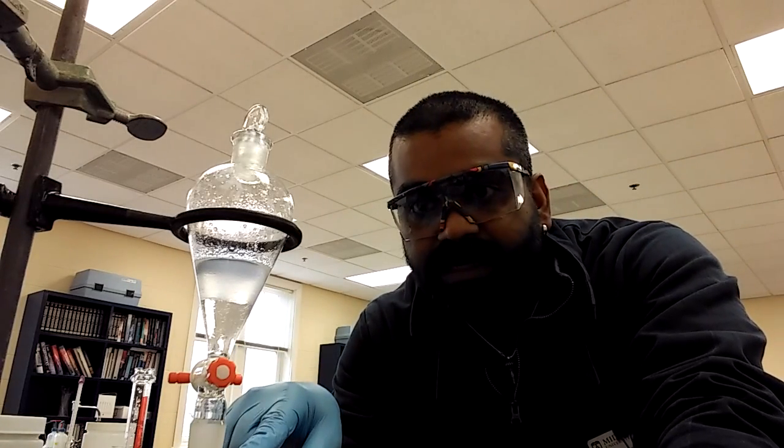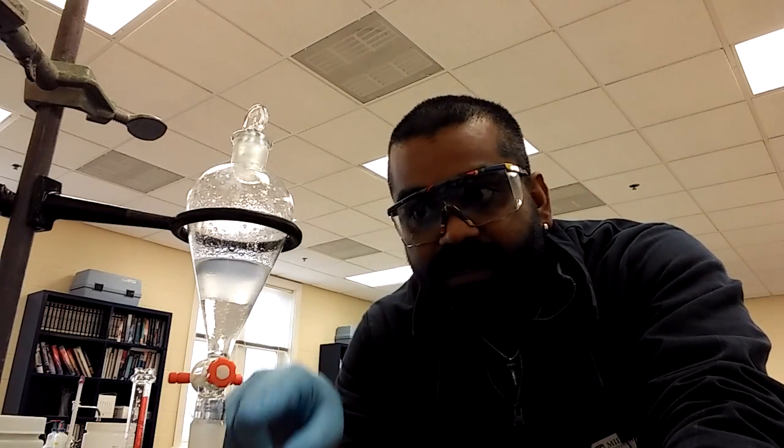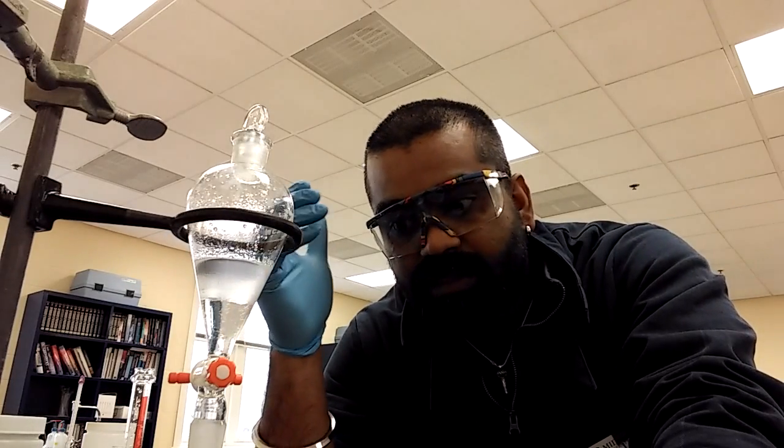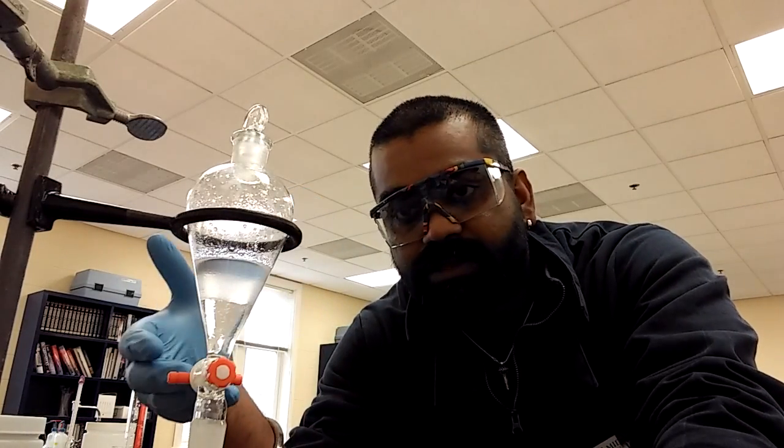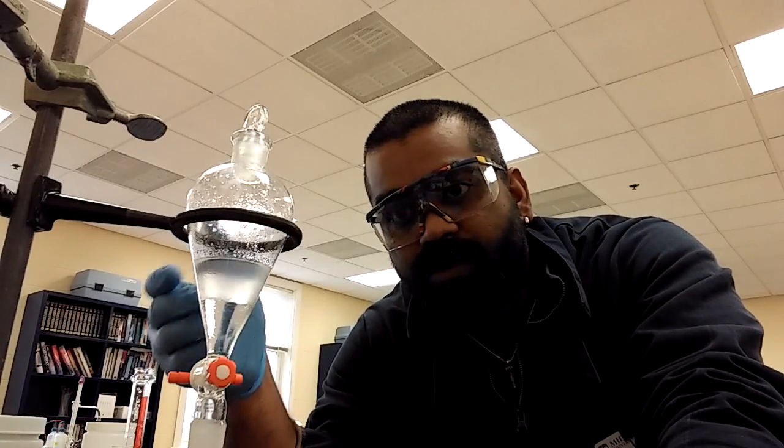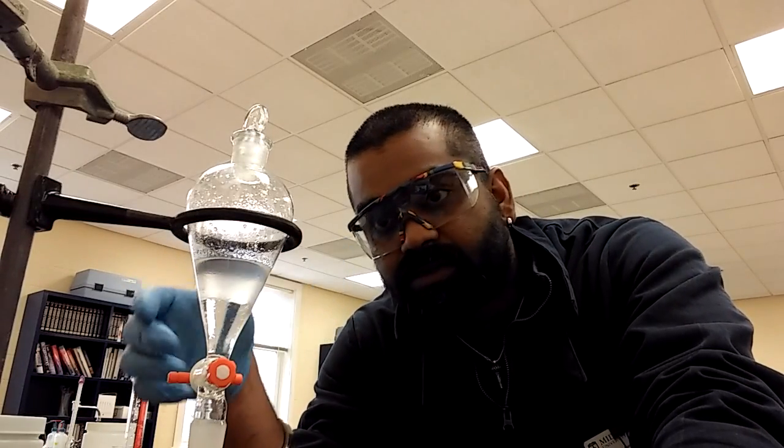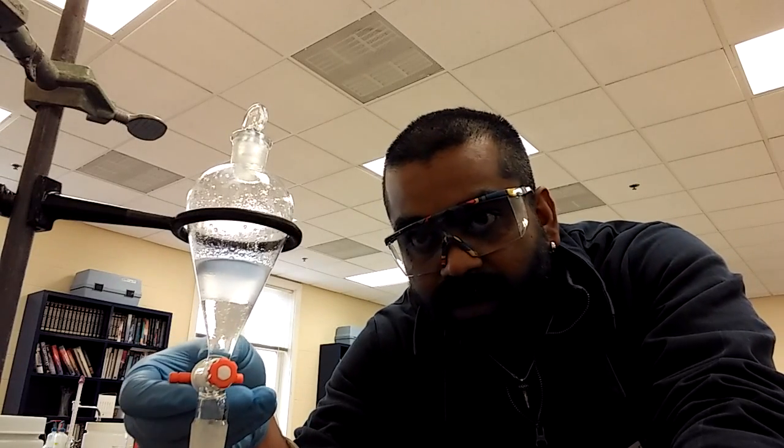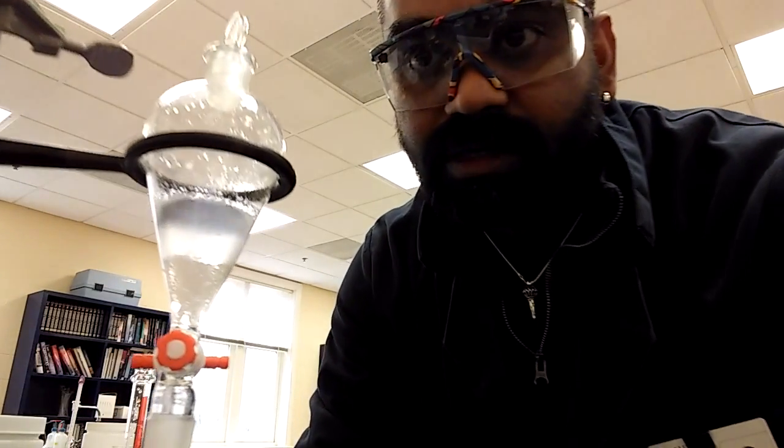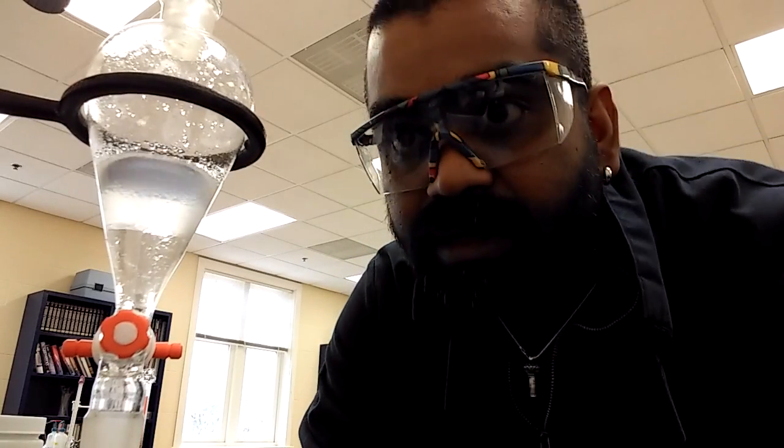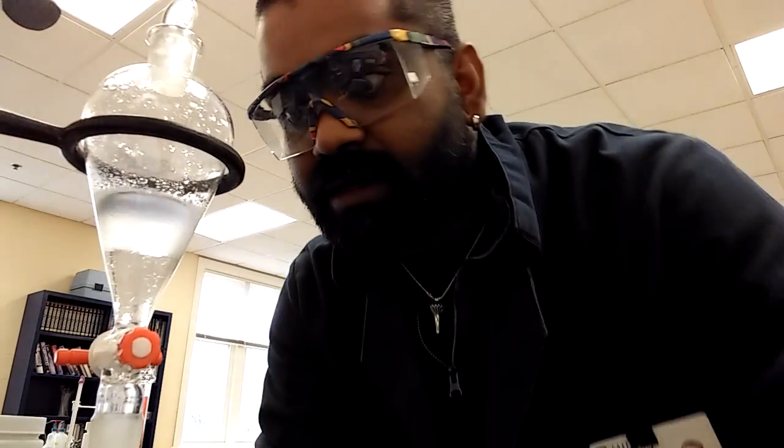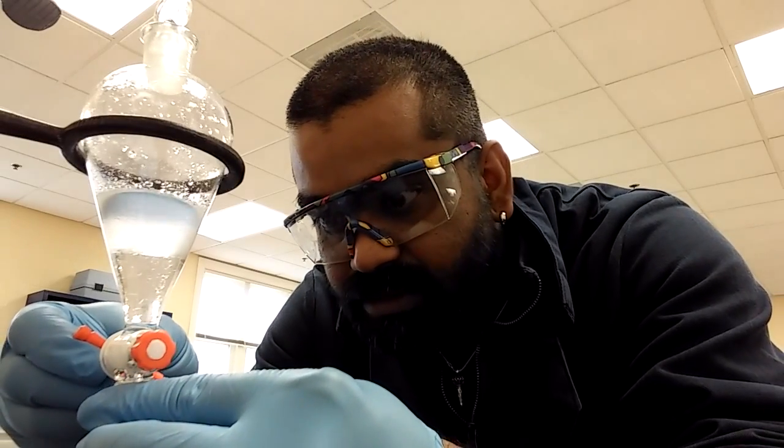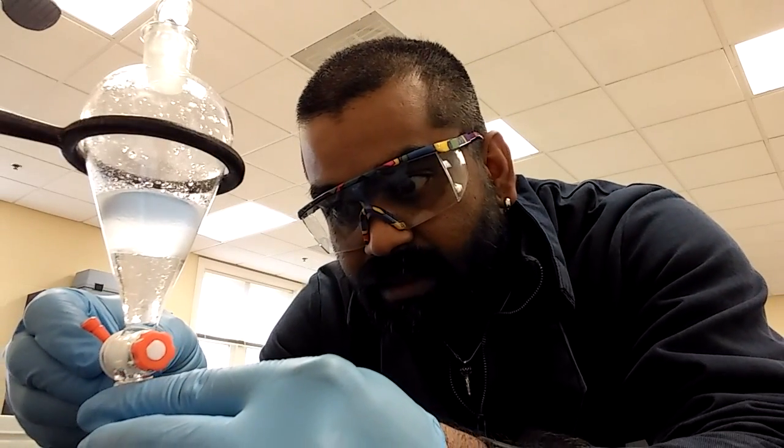Keep in mind, the flask contains a lot of hydrochloric acid and the aqueous layer contains water. So don't open the stopcock and just let the water drain really quick. You'll start to see bubbles because you don't add water to acid, you add acid to water, but we're doing the reverse here. Just gently open the stopcock. You can clearly see the two layers.